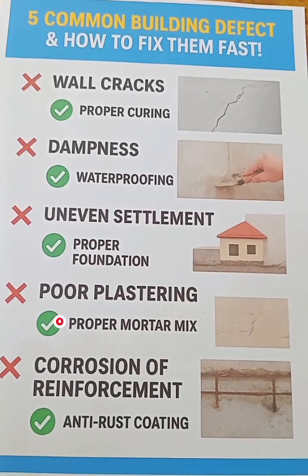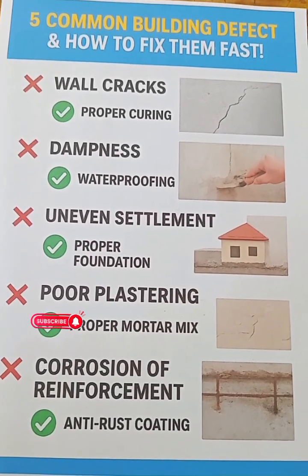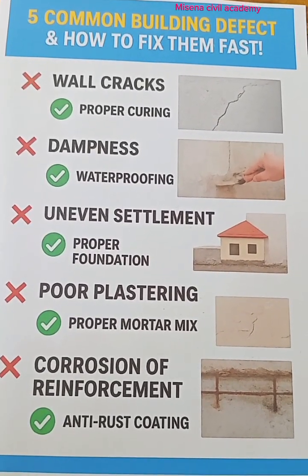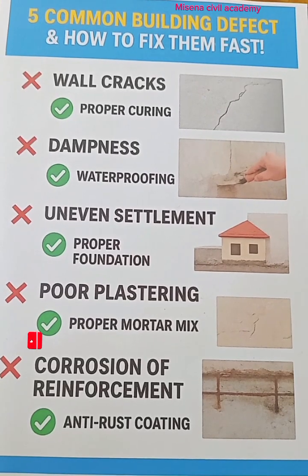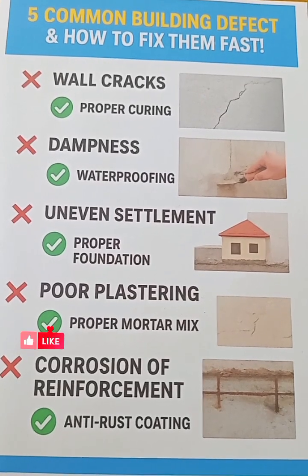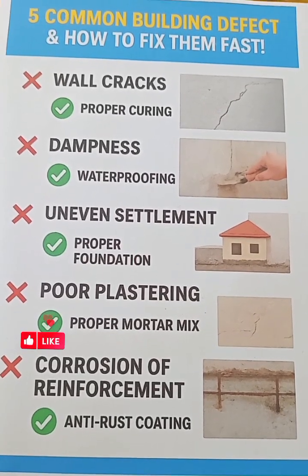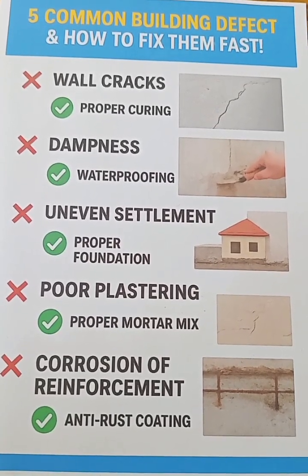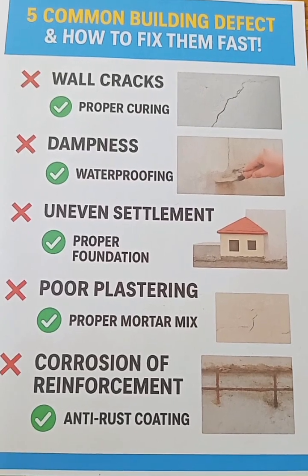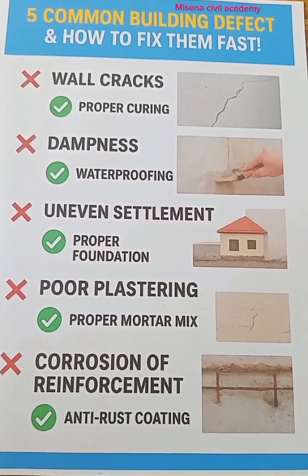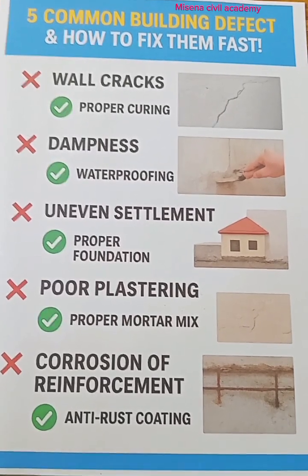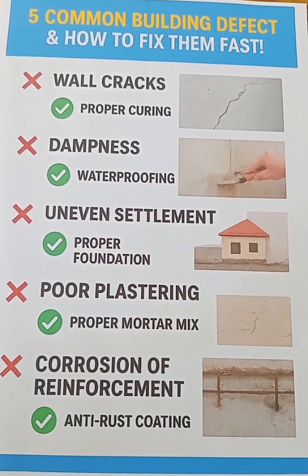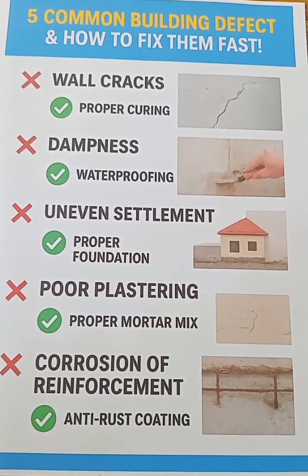Remember that good construction leads to a safe and durable building structure. Now let's expose them in a simple way. Number one: cracks — this can be minimized by proper curing. Number two: dampness — this can be minimized by waterproofing.